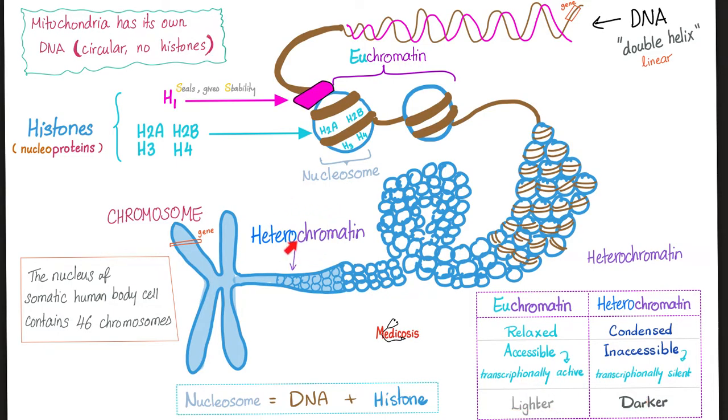Conversely, this tightly packed DNA is called heterochromatin. Hetero means different. Different from the U. It is condensed, not relaxed. It is inaccessible, which means transcriptionally silent and inactive. And therefore, it appears darker on microscopy.